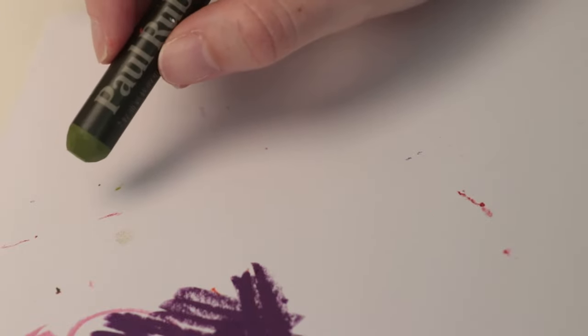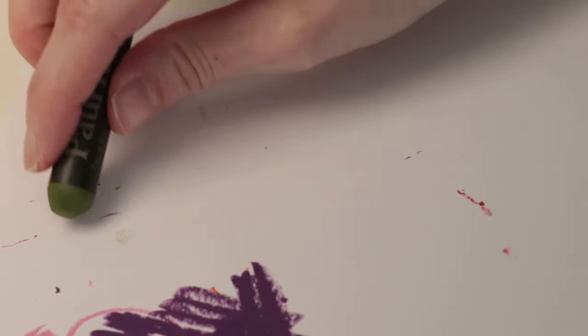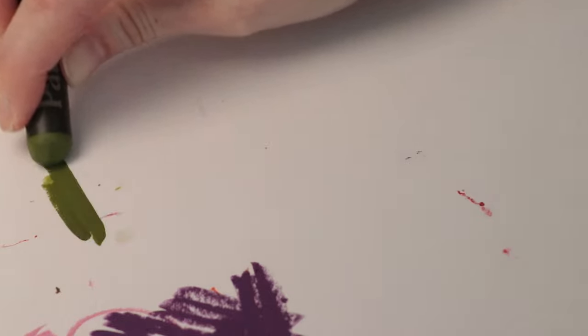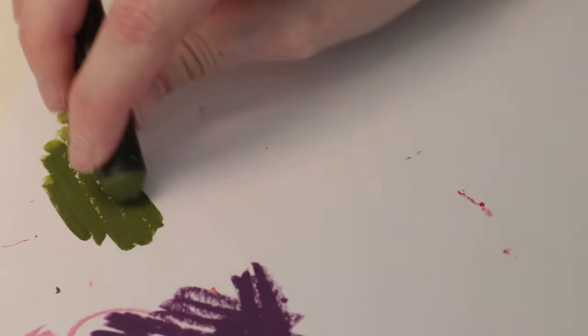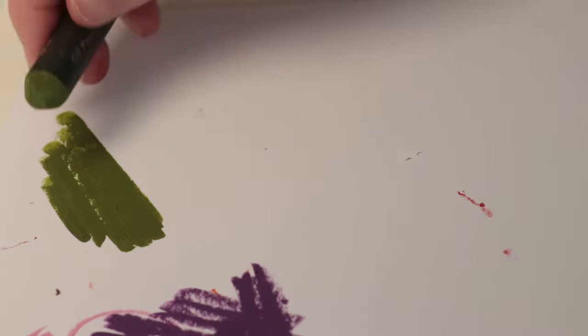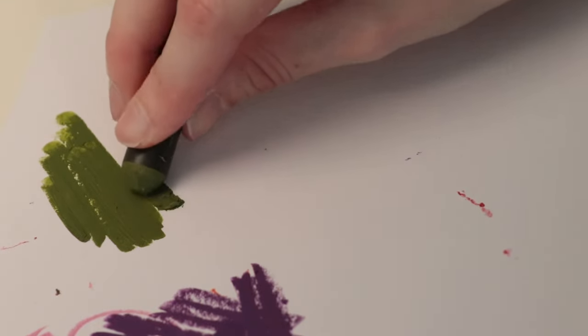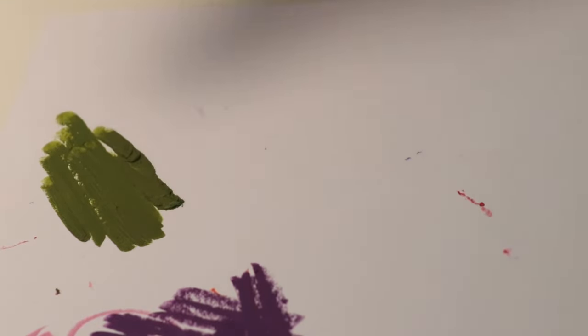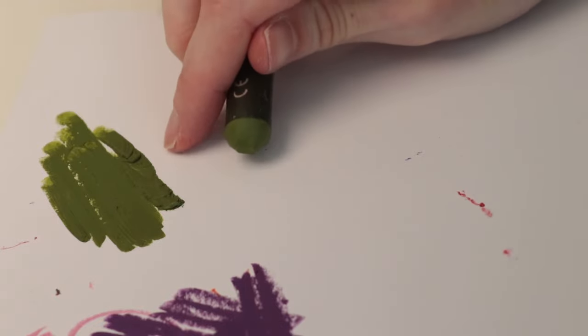Next, I'm going to do the Paul Rubens. These were sent to me. I thought I would disclose it. They are super creamy. I would say parallel with Sennelier. But these ones are even more prone to leave texture. I didn't apply any pressure here, like barely anything.